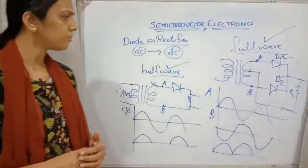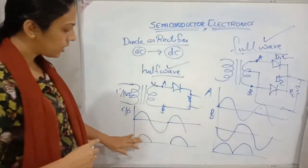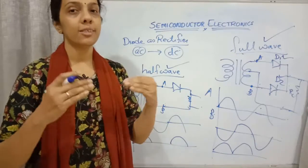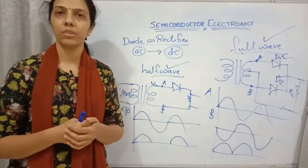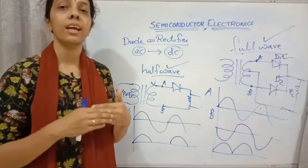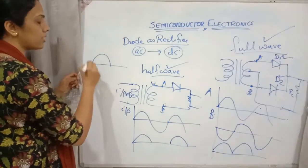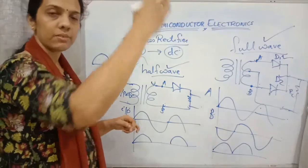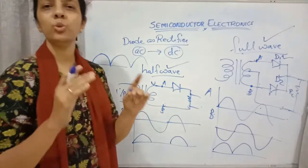So first is half wave, next is full wave rectifier. Even though we say it is AC to DC conversion, looking at the output waves, only positive half cycles are present. But it is not a constant voltage — it goes up and down. So this is not a perfect unidirectional DC current.